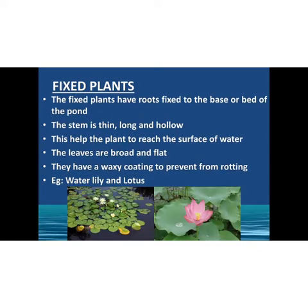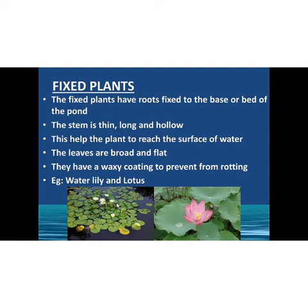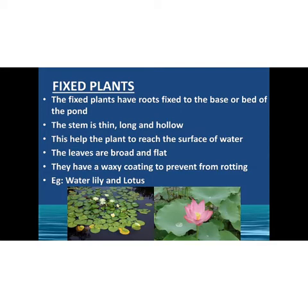Now let's study about fixed plants. Fixed aquatic plants have their roots fixed to the bed of the pond or river. They have a thin stem which is long and hollow, so the plant can reach to the surface of water. The leaves are broad and flat with a waxy coating. This feature helps to prevent rotting or decaying of the plant. Stomata is present on the upper surface of the leaf.